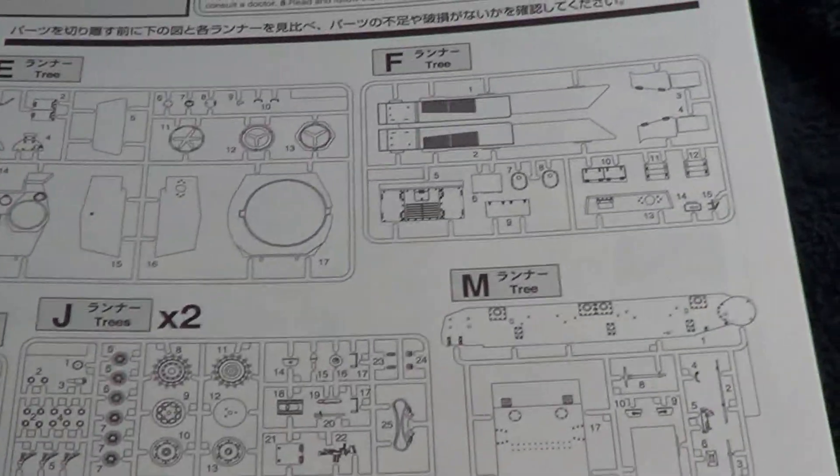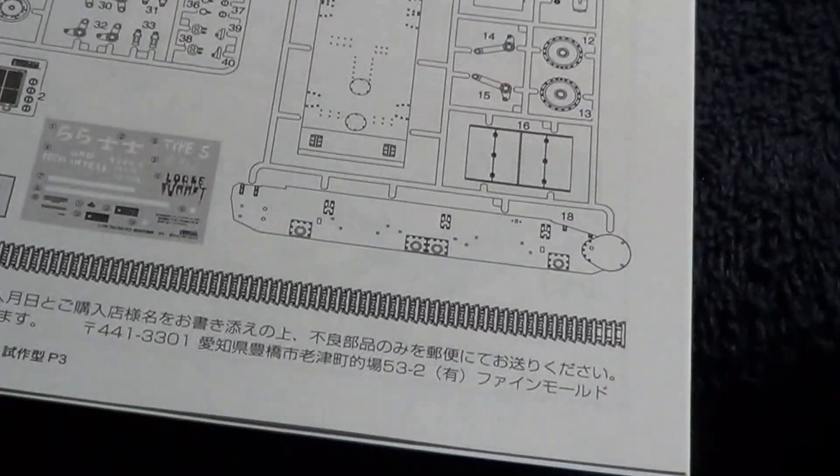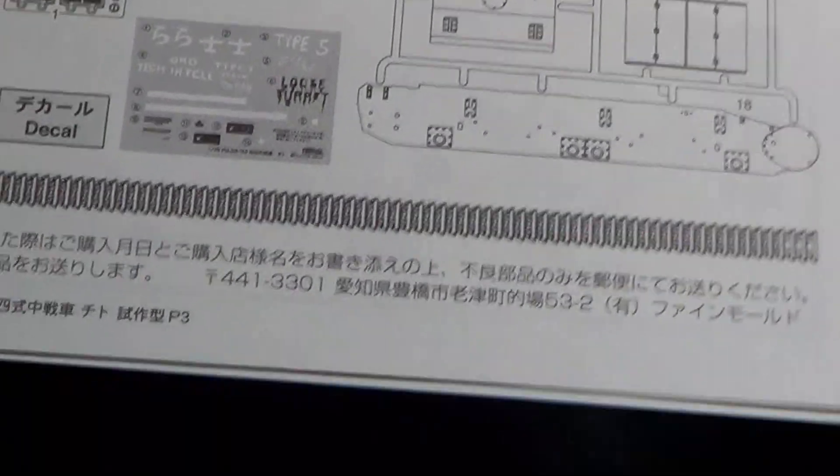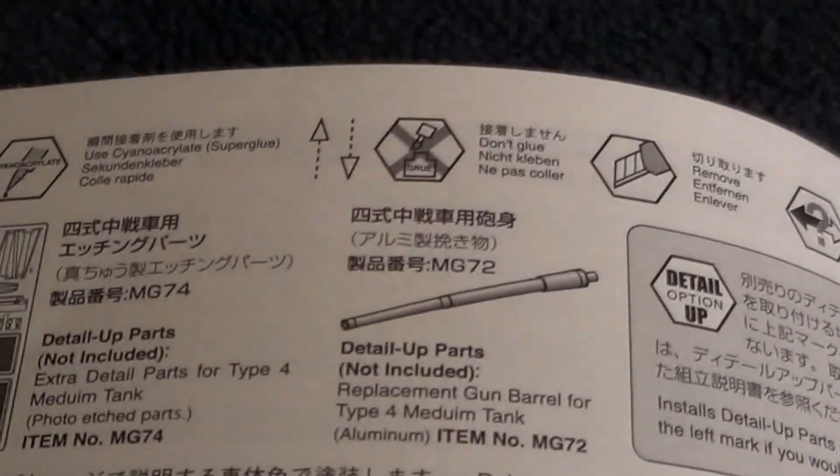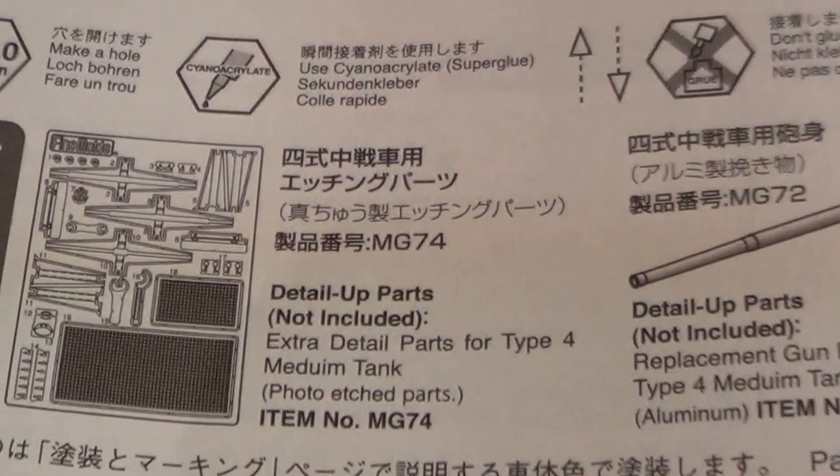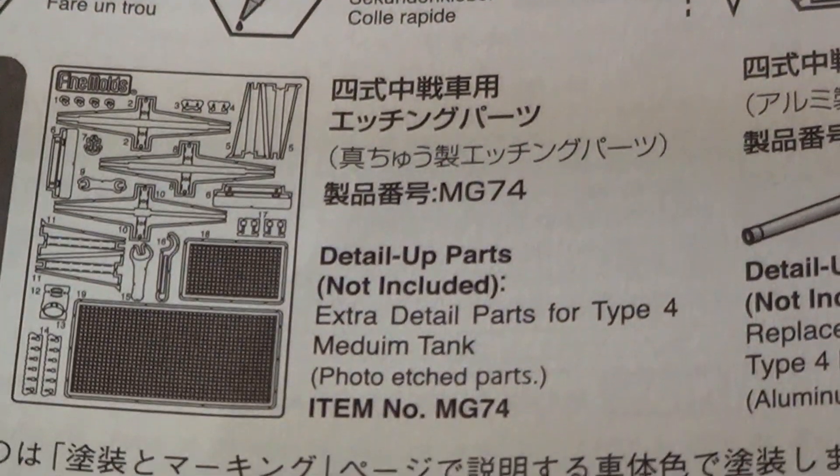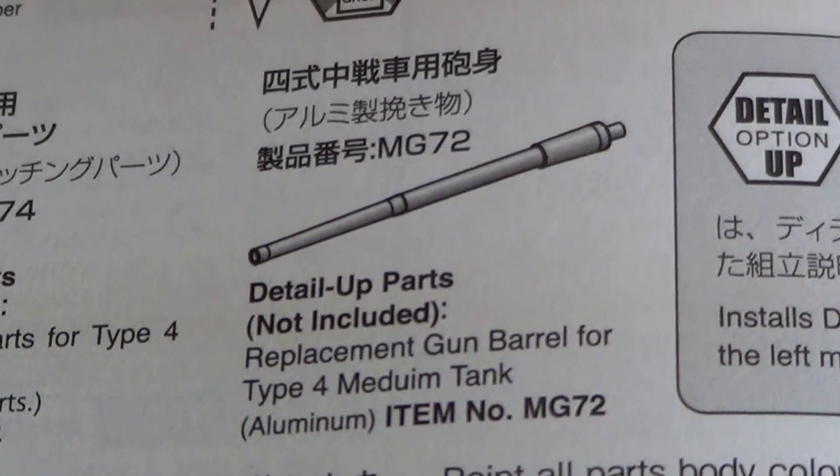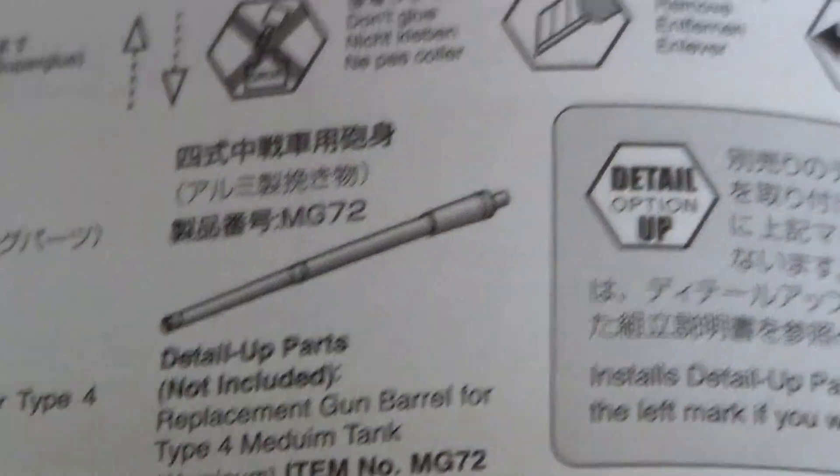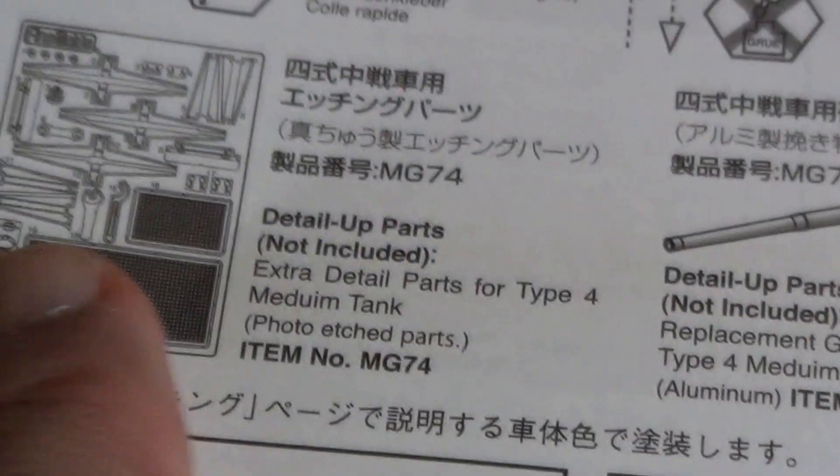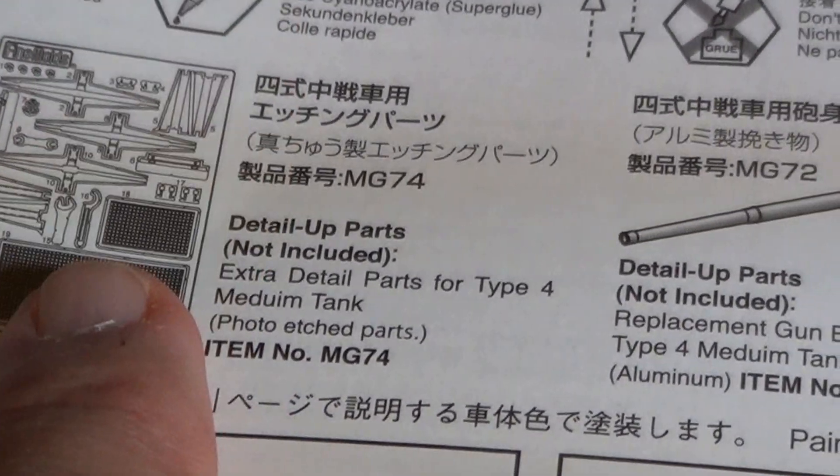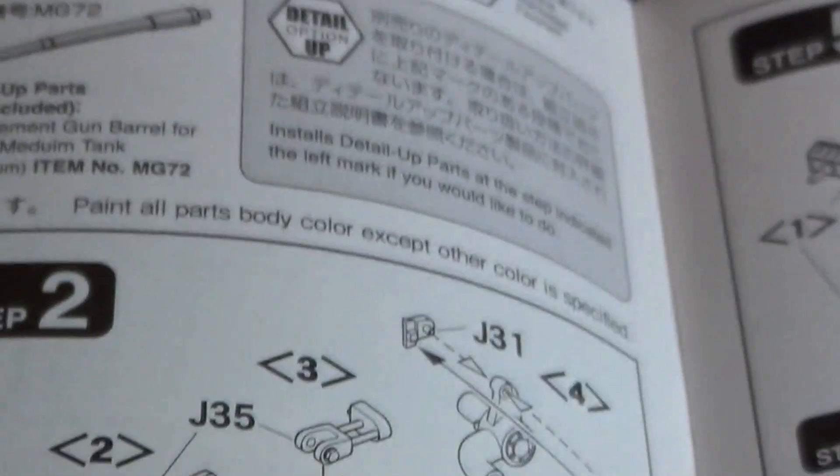And here we have the parts list, it seems that everything is used. And of course, Photo Etch is not included in this kit, detail up parts not included, nor is the aluminum barrel. They're sold separately, the barrel I think goes for about $12 US, and the Photo Etch sheet I want to say it's about the same, I'm not sure.